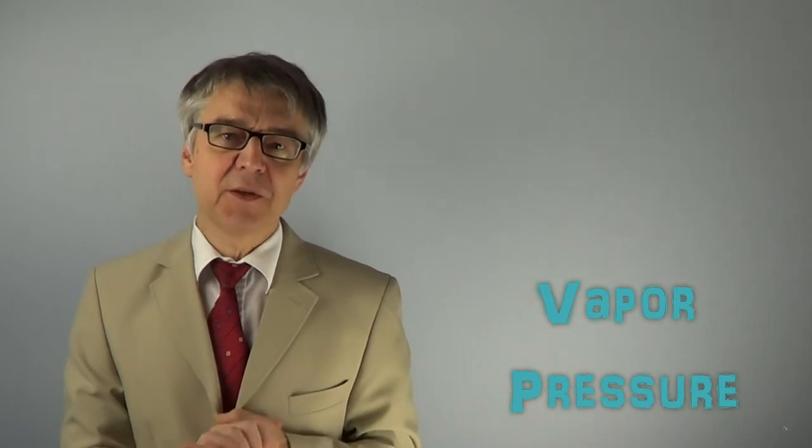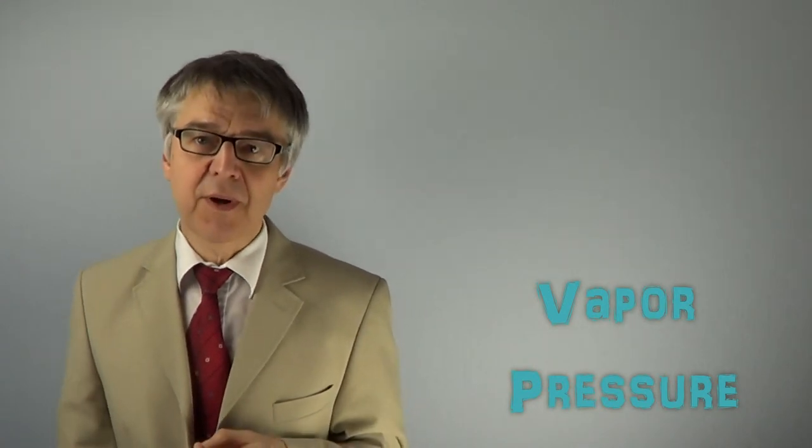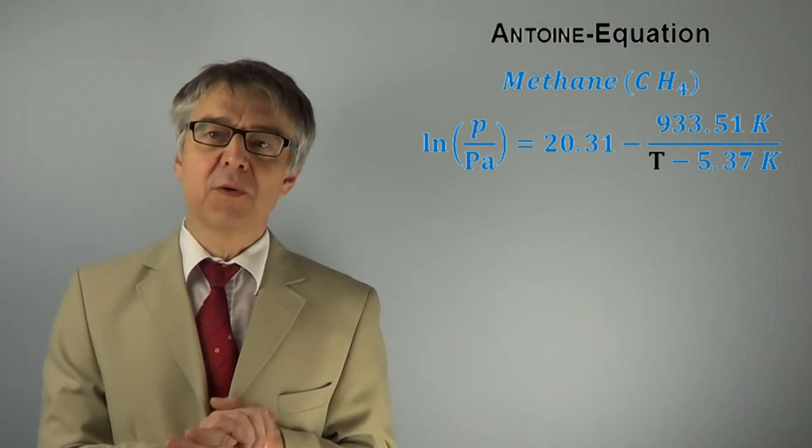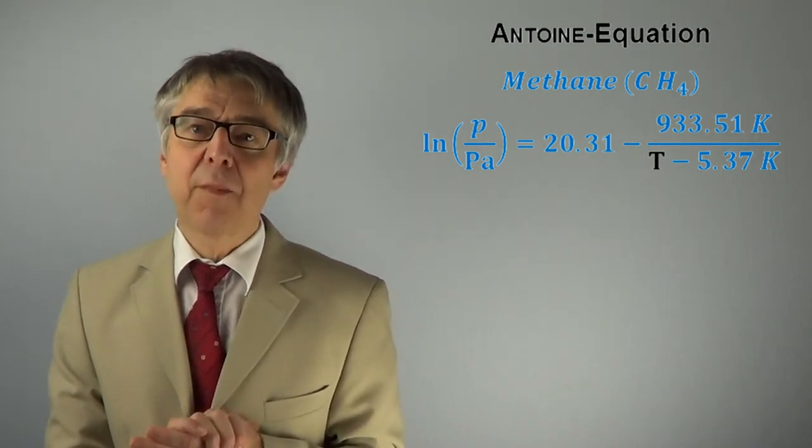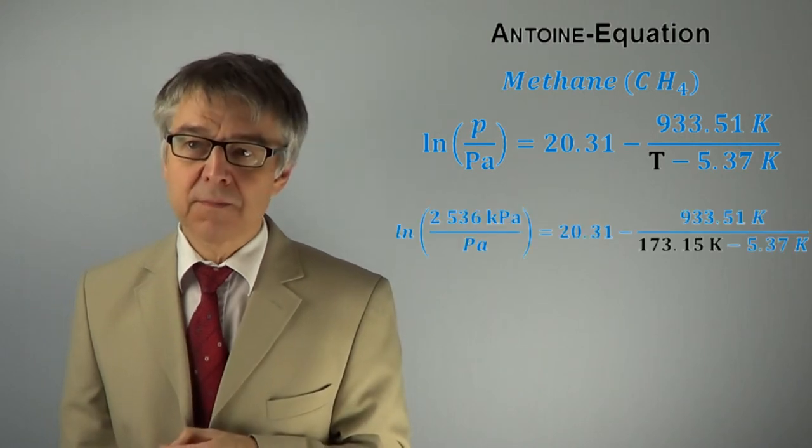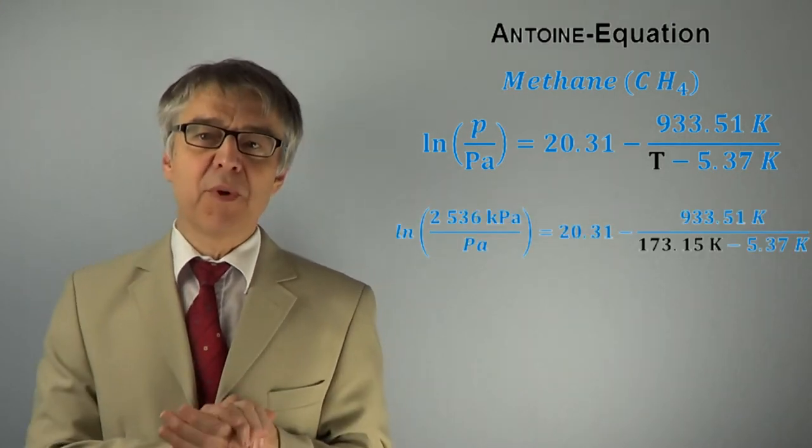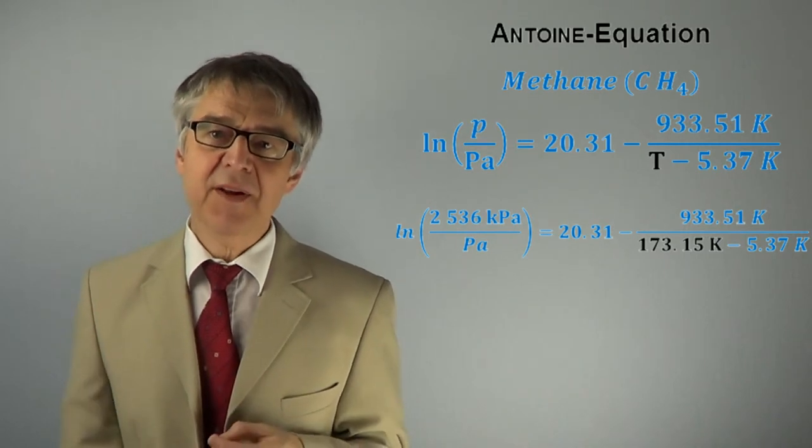Then we calculate the vapor pressure at negative 100 degrees Celsius by plugging in 173.15 Kelvin in Antoine's equation for both components. For methane, a vapor pressure of 25 bars is calculated.